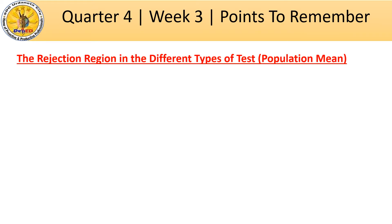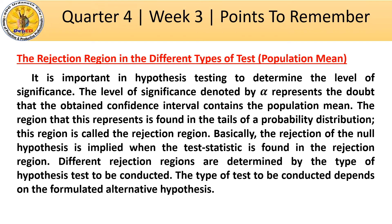The rejection region in different types of hypothesis tests — it is important in hypothesis testing to determine the level of significance. The level of significance, denoted by alpha, represents the doubt that the obtained confidence interval contains the population mean. The region it represents is found in the tails of a probability distribution. This region is called the rejection region. The rejection of the null hypothesis is implied when the test statistics is found in the rejection region. Different rejection regions are determined by the type of hypothesis test to be conducted, which depends on the formulated alternative hypothesis.